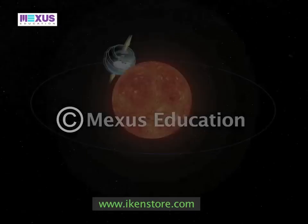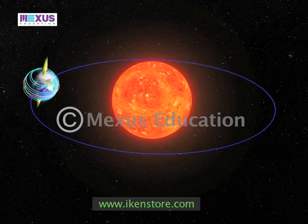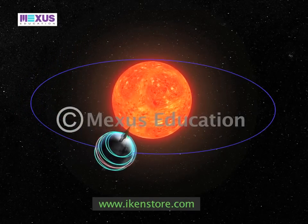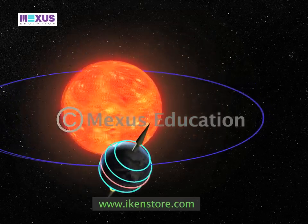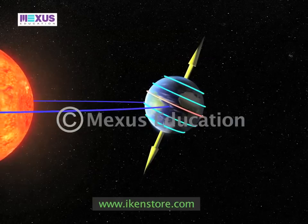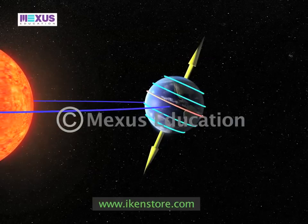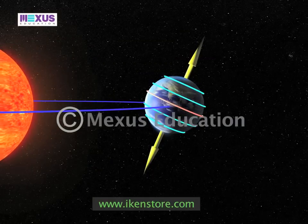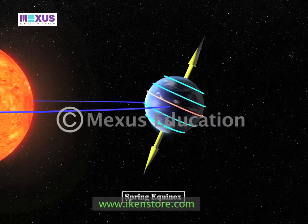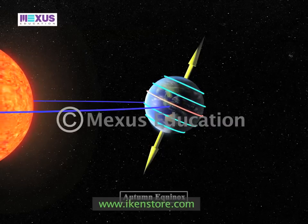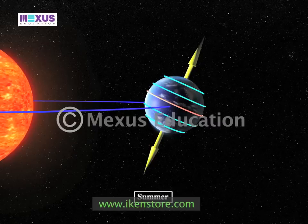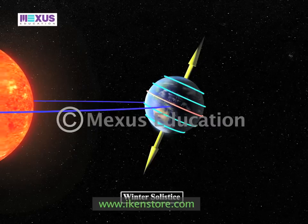After having inspected the significance of earth's tilt, let us examine how the spinning of the top on its axis affects and changes the seasons we frequently enjoy: namely the spring equinox, the autumn equinox, and the summer and winter solstice.